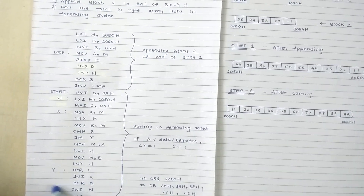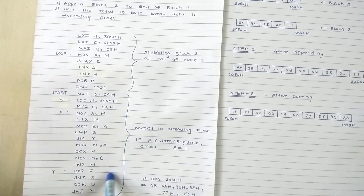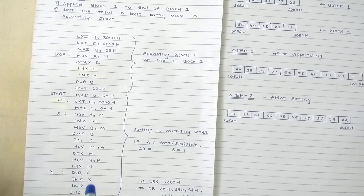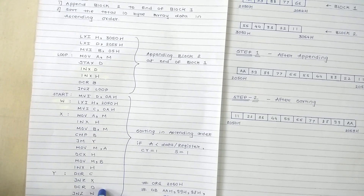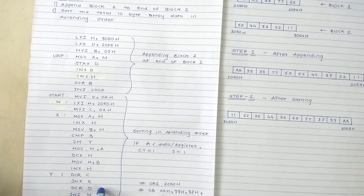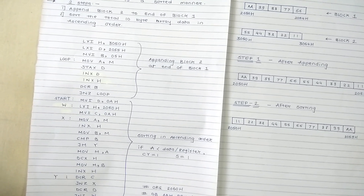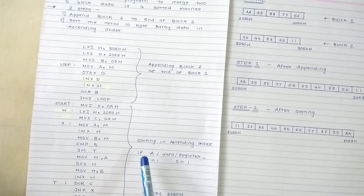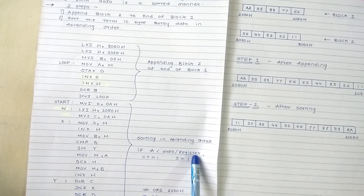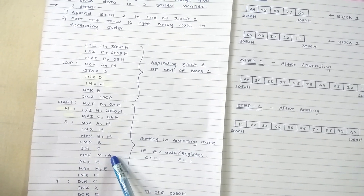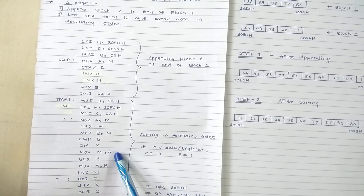It will jump back to label X and continue for 10 times. After completing 10 iterations of C, it will decrement D and jump to label W. The program stops when D reaches 0. If the data in the accumulator is not less than the register B data, it moves to the next instruction below the jump-minus, meaning the accumulator holds the greater value.